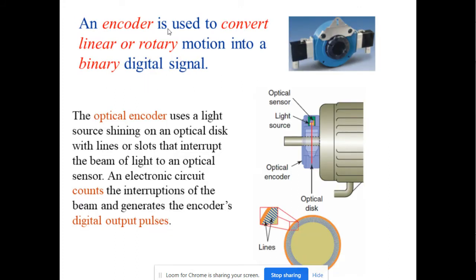Encoder. Normally used to convert linear or rotary motion into binary digital signal. How much the hole inside the encoder will determine the count, I mean to count how much the motor was rotated. We use this optical encoder which uses light shining on the optical disc with lines and slots that interrupt the beam of light to an optical sensor. The string circuit will count how many times the light has interrupted the beam and generate the encoder digital output pulse.